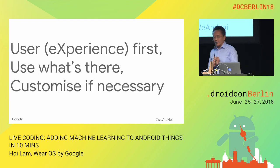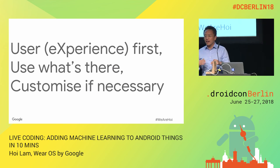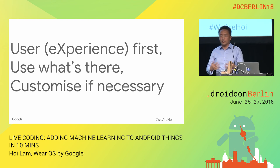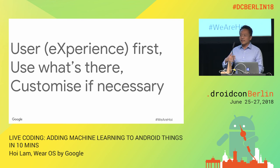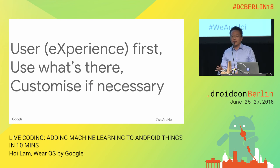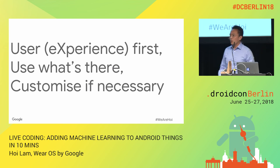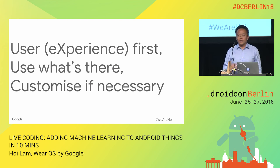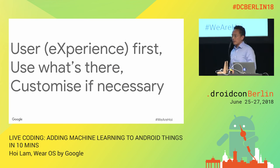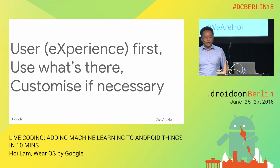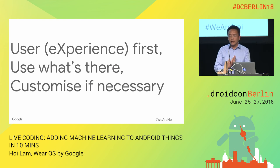Overall, the number one thing is to put user experience first. If you're thinking about deploying ML in your product, think about how it will make the user's journey better. Second, I'd strongly encourage you to use what is already there — even if you think you can train something better — prototype with existing APIs first and work with your UX researchers to optimize the user flow. Third, customize only if necessary, because there is a lot of work that goes into these models, and if you don't have the compute power, the resources, the expertise, and the data, it's really difficult to get to a position where it's accurate enough.